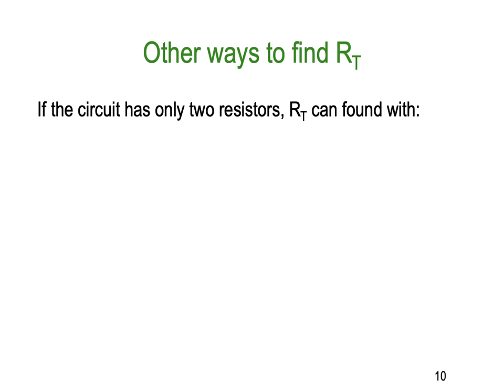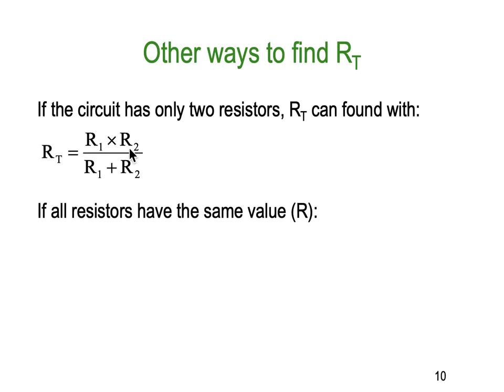So if this circuit only has two resistors in it, two in parallel, we can use a shortcut formula, and this is it. R total is equal to R1 multiplied by R2 divided by R1 plus R2. Nice and handy.